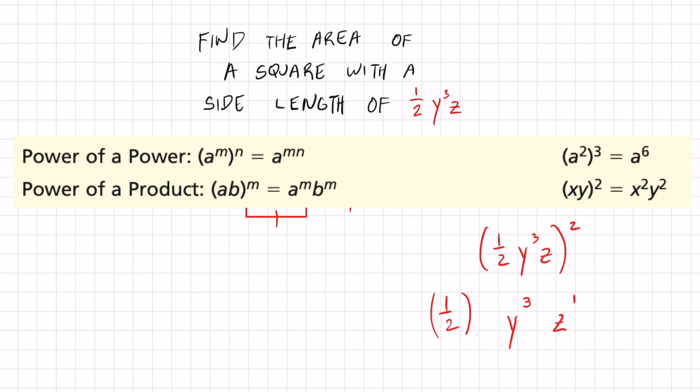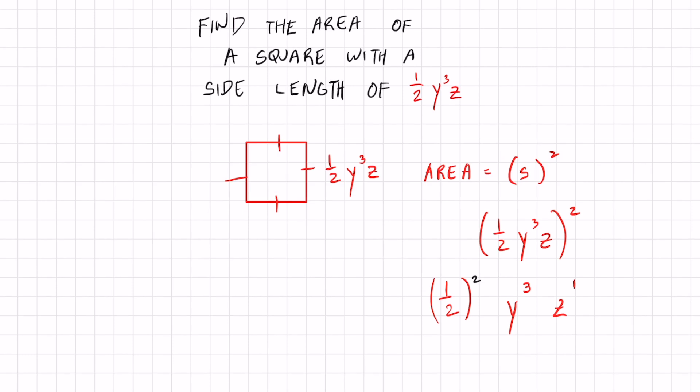Power of a power is just saying to multiply each exponent in the inside by the outside exponent by two times this by two and times this by two.